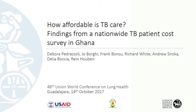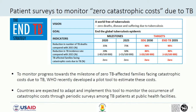Good morning everyone. We are starting this session from West Africa, in Ghana. The End TB strategy includes a new target of having zero TB-affected families facing catastrophic costs due to TB. To monitor progress towards this milestone, the WHO has recently developed a tool that countries are expected to adapt and use to conduct surveys monitoring progress towards this target and assess the occurrence of catastrophic costs.